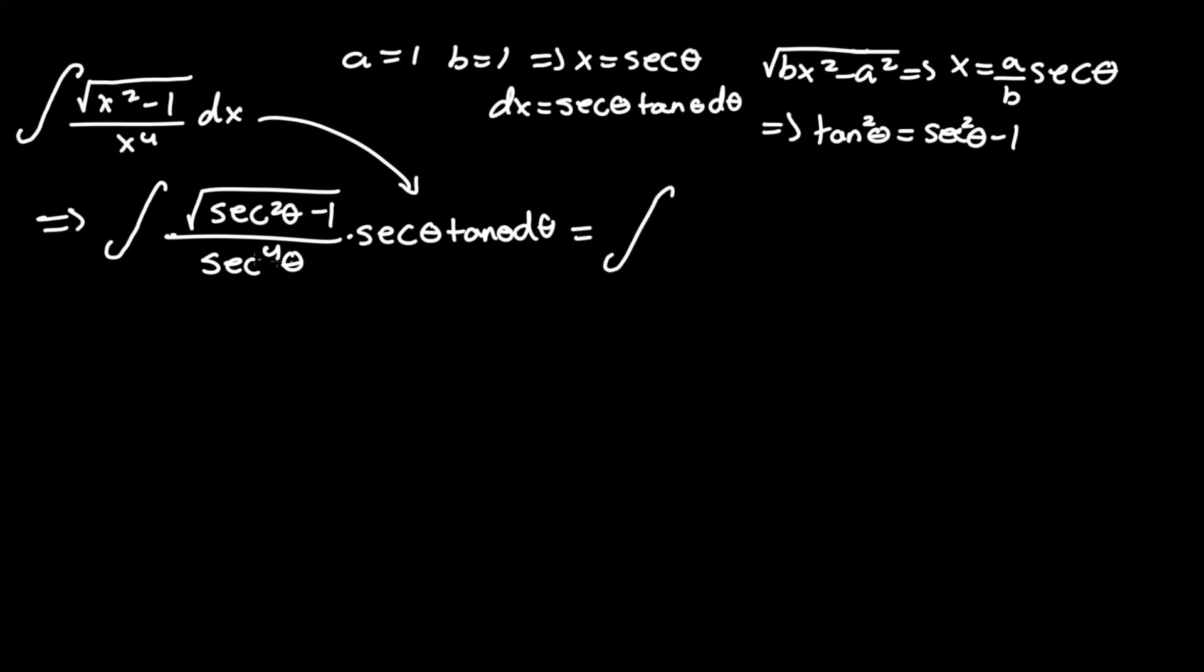This is equal to the integral of, we can already tell from this term here, that secant squared theta minus 1 is tan squared theta. So let's substitute that in, tan squared theta.